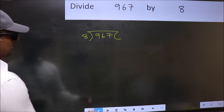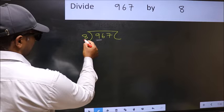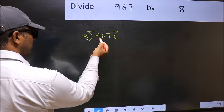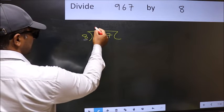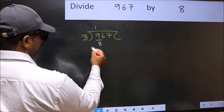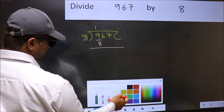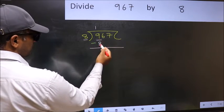Next, here we have 9 and here 8. A number close to 9 in 8 table is 8 once 8. Now we should subtract. 9 minus 8, 1.